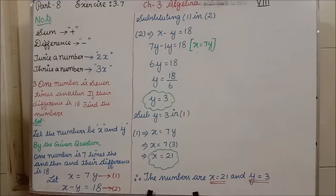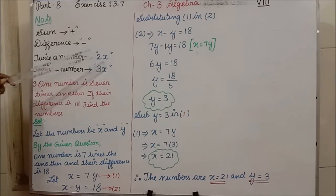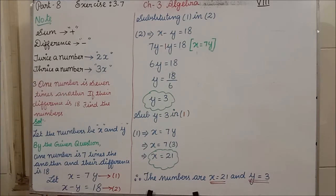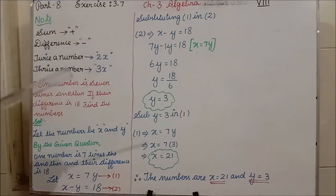Twice a number — we don't know what that number is, so we assume it as x. Twice a number means 2x. You can put 2x, 2y, 2m, or 2l — any alphabet you can use. Similarly, thrice a number means 3x, and you can use any alphabet: 3s, 3t. The concept is: twice means 2 multiplied by any alphabet, thrice means 3 multiplied by any alphabet.